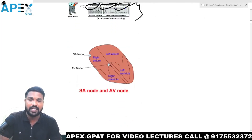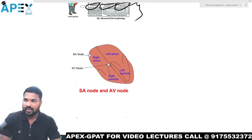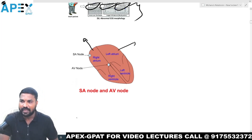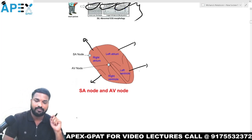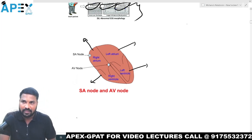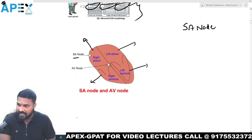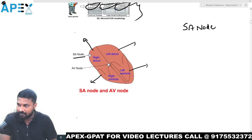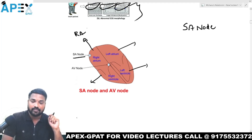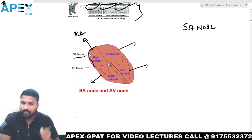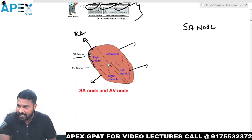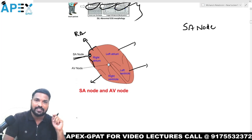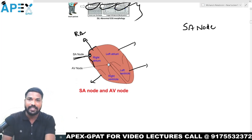Now we will try to understand cardiac arrest. The heart has four chambers: right atrium, left atrium, right ventricle, and left ventricle. In the heart, we have a special node called the SA node. The SA node is located in the walls of the right atrium.